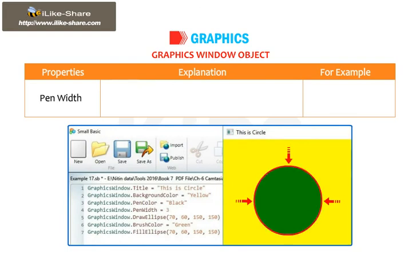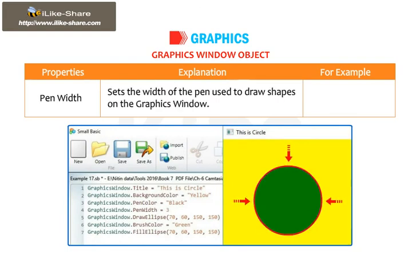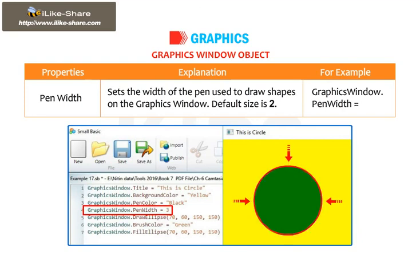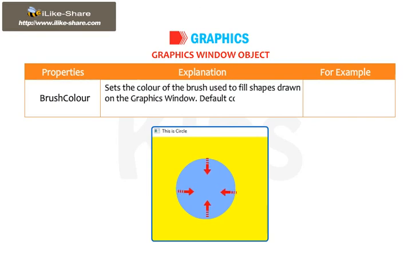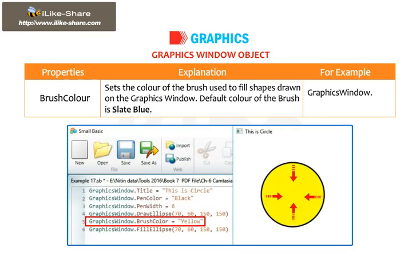Pen Color sets the color of the pen used to draw shapes on the Graphics Window. The default pen color is Black. Example: GraphicsWindow.PenColor = "Green". Pen Width sets the width of the pen used to draw shapes on the Graphics Window. The default size is 2. Example: GraphicsWindow.PenWidth = 3. Brush Color sets the color of the brush used to fill shapes drawn on the Graphics Window. The default color of the brush is Slate Blue. Example: GraphicsWindow.BrushColor = Yellow.